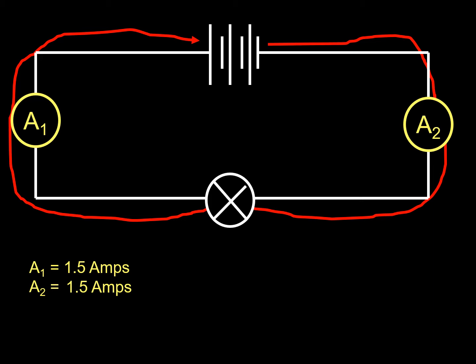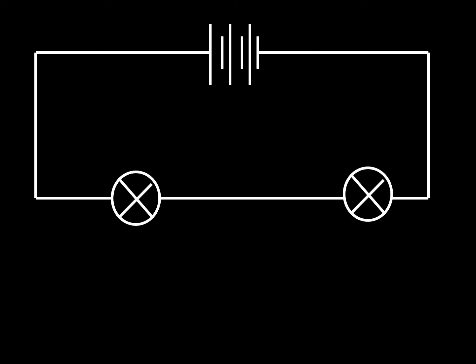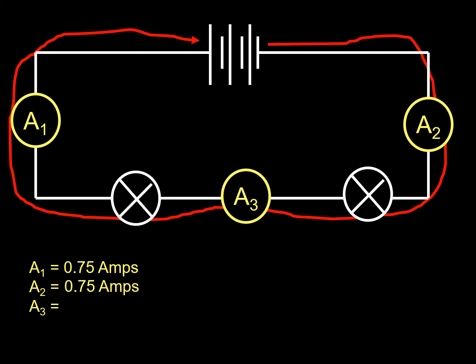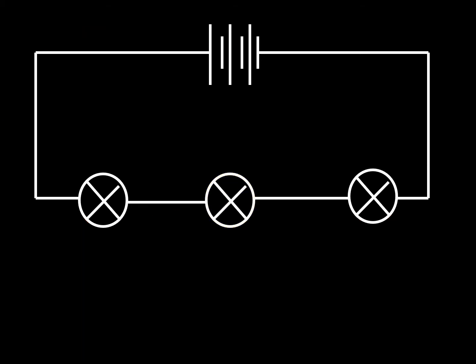Remember, electricity has to start off and get back to where it started, and no electricity is lost — it does lose some energy, but that's a different thing. Here's another series circuit: electricity goes right round and I measured it at 0.75 amps. What would it be at the next point? 0.75 amps. And in the middle? 0.75 as well. In a series circuit it's all the same.